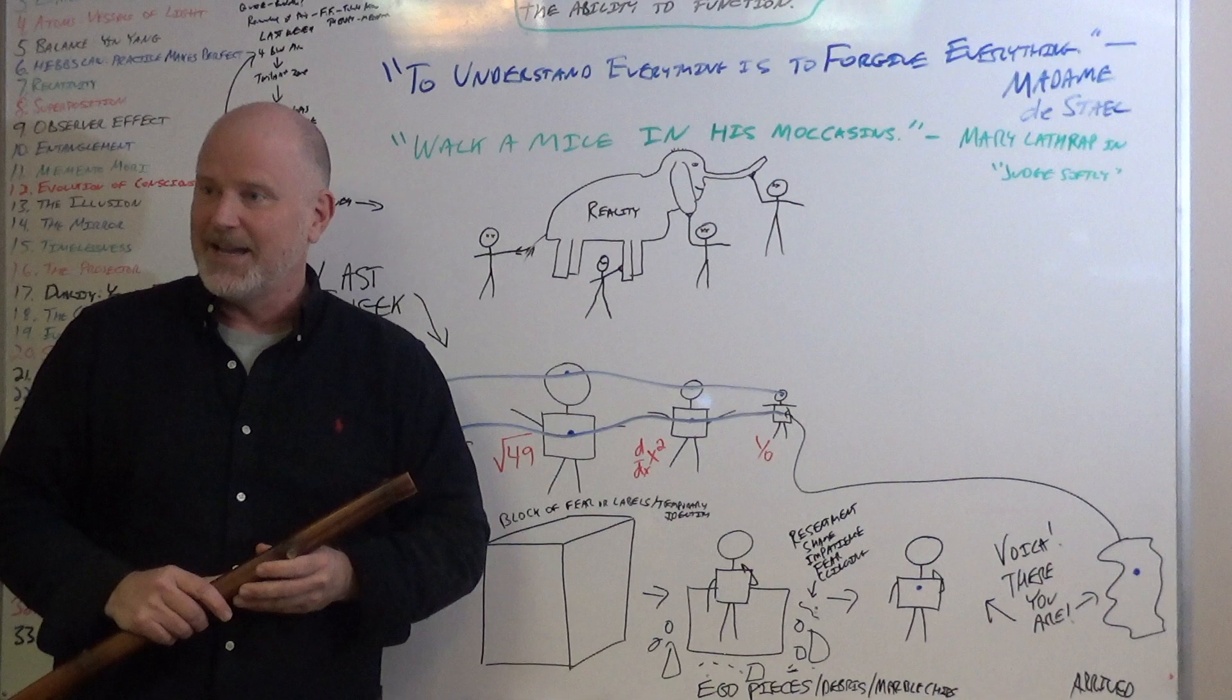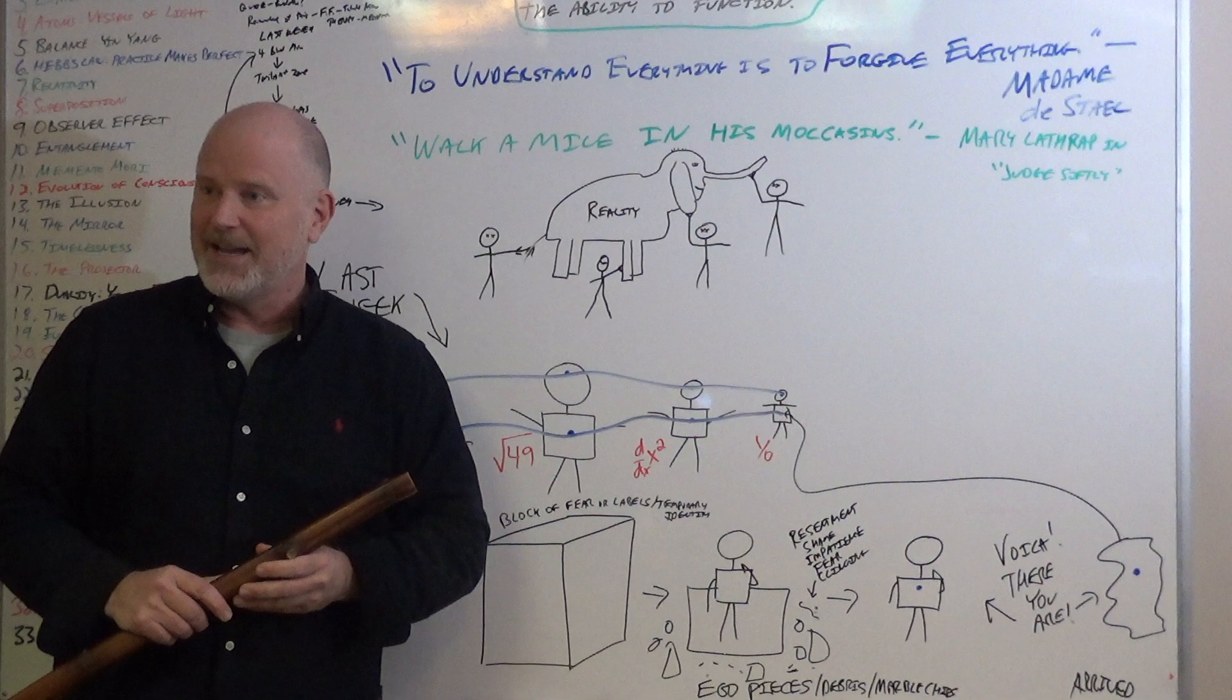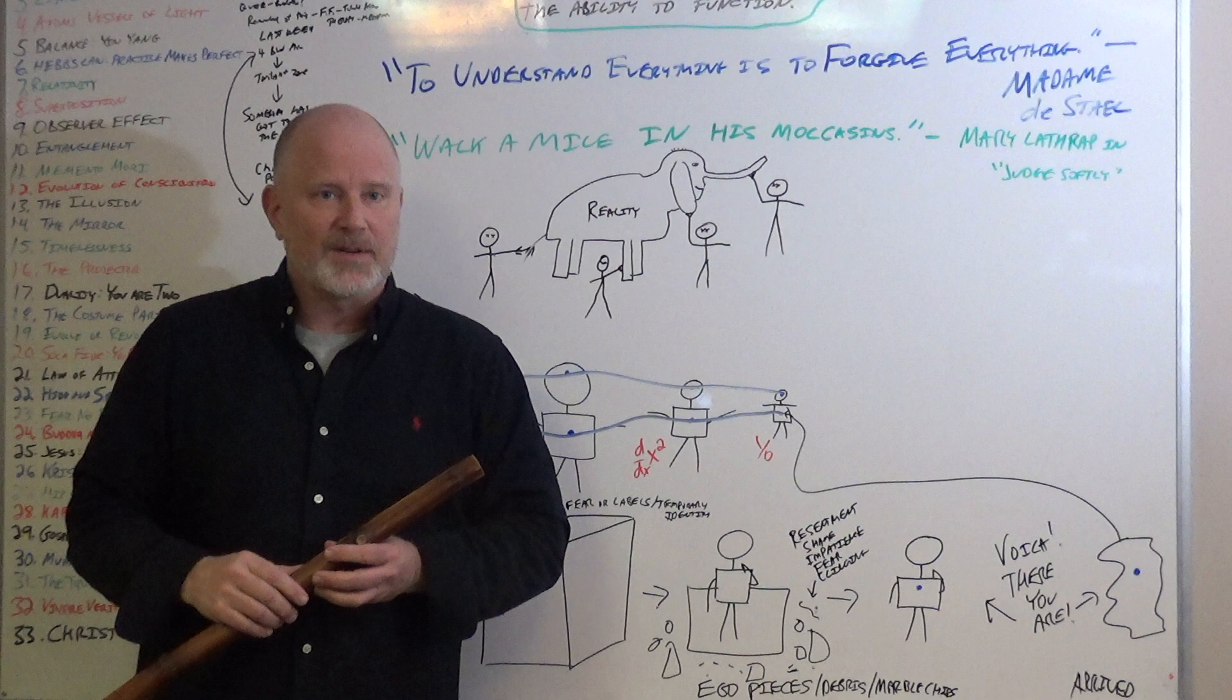One of the songs in Freaky Friday is somebody has got to take the blame. And that's one of the most dysfunctional ways we live in this world. It's a funny song in the musical, but most of us live our lives that way, looking for someone to blame.